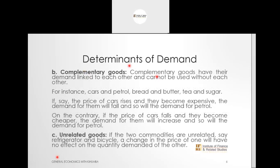Now, looking at complementary goods: a complementary good has its demand linked to another good — you cannot use one without the other. Examples include car and fuel, bread and butter, or your right shoe and left shoe. If the price of cars goes up and they become expensive, their demand will go down, and if demand for cars goes down, so will demand for fuel. On the other hand, if the price of cars were to go down, demand for them will increase, and so will demand for petrol.